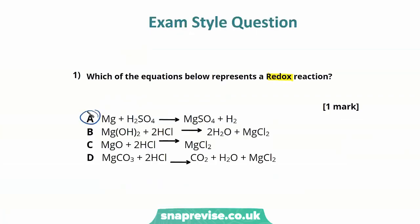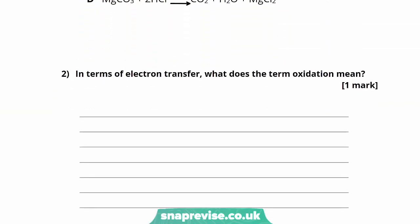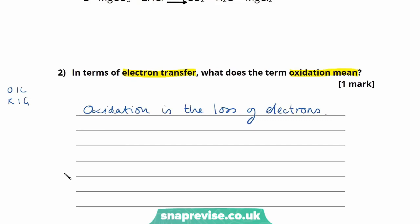Exam question 2: In terms of electron transfer, what does the term oxidation mean? This is a one-mark definition question. Remembering OIL RIG, the answer is that oxidation is the loss of electrons — a simple definition easy to remember with the acronym.